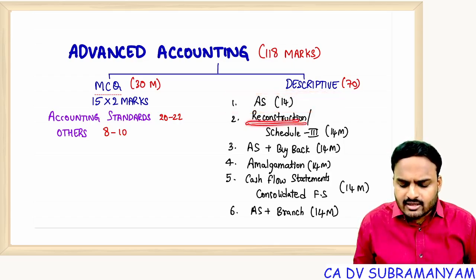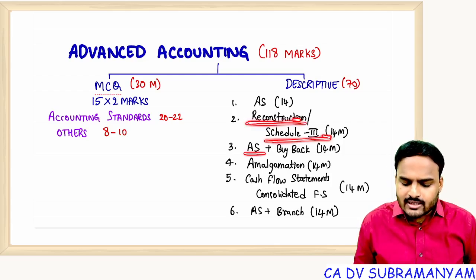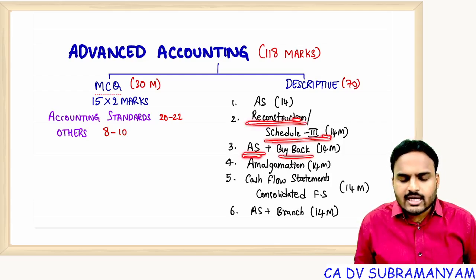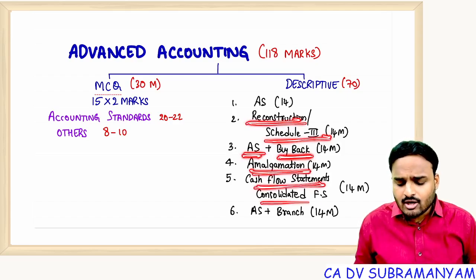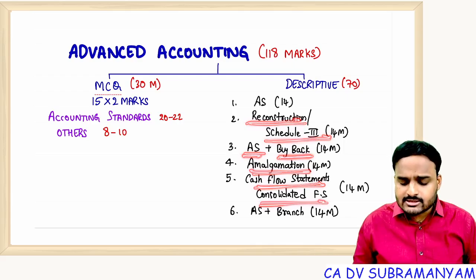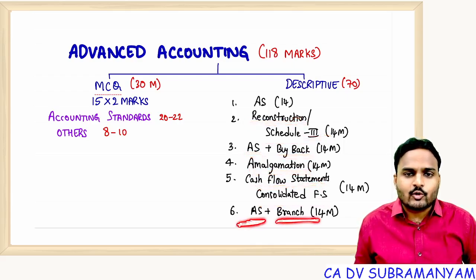Question 2 will be internal reconstruction or Schedule 3 financial statements. Question 3: accounting standards plus buyback. Question 4: amalgamation. Question 5: cash flow statement or consolidated financial statements. Question 6: accounting standards plus branch accounting.